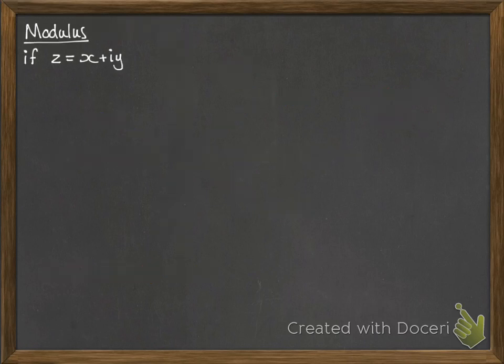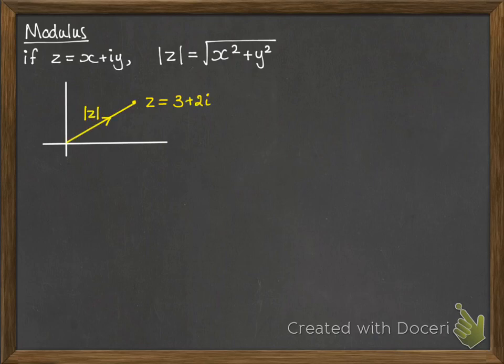Okay, the modulus, if z equals x plus iy, the modulus of z is equal to the square root of x squared plus y squared. Now the modulus simply means the length of that vector that we were talking about. So you can see quite easily from Pythagoras that you're just going to do the real part squared and the imaginary part squared, add them together and square root them.